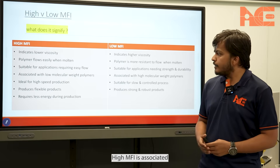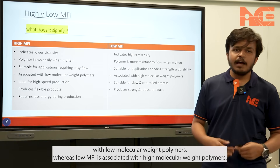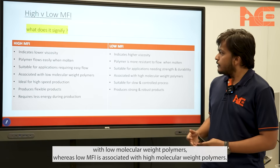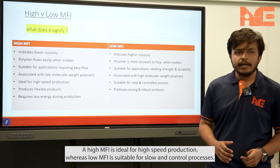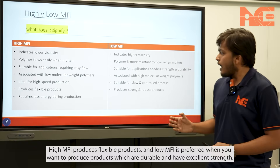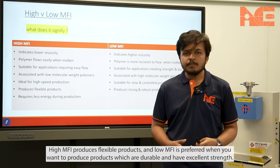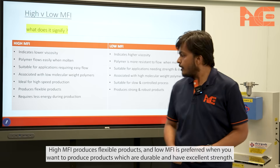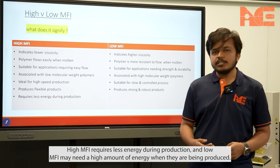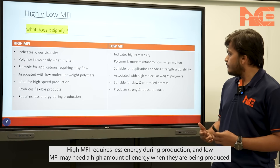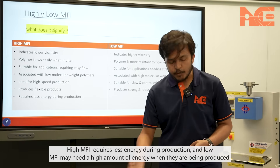High MFI is associated with lower molecular weight polymers, whereas low MFI is associated with high molecular weight polymers. High MFI is ideal for high-speed production, whereas low MFI is suitable for slow and controlled processes. High MFI produces flexible products, and low MFI is preferred when you want durable products with excellent strength. High MFI requires less energy during production, while low MFI may need a high amount of energy.